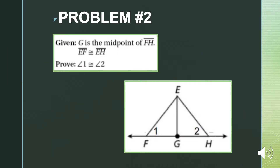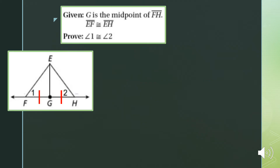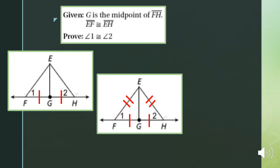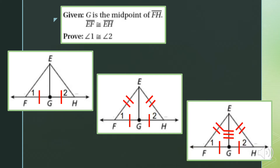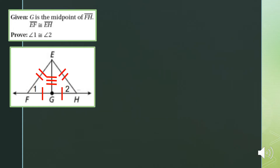Problem number two. We were given that G is the midpoint of line segment FH, so we can say that line segment FG is congruent to line segment GH. We were also given that line segment EF is congruent to line segment EH. We need to prove that angle 1 is congruent to angle 2 using CPCTC, but first we need to prove the two triangles are congruent. The third corresponding part is line segment EG congruent to itself by reflexive property.